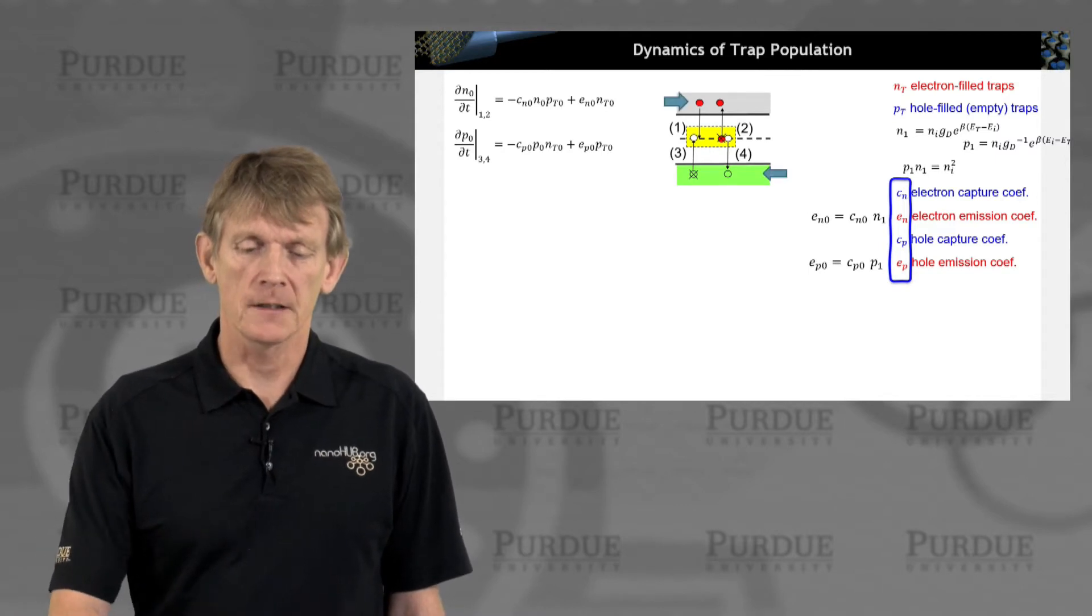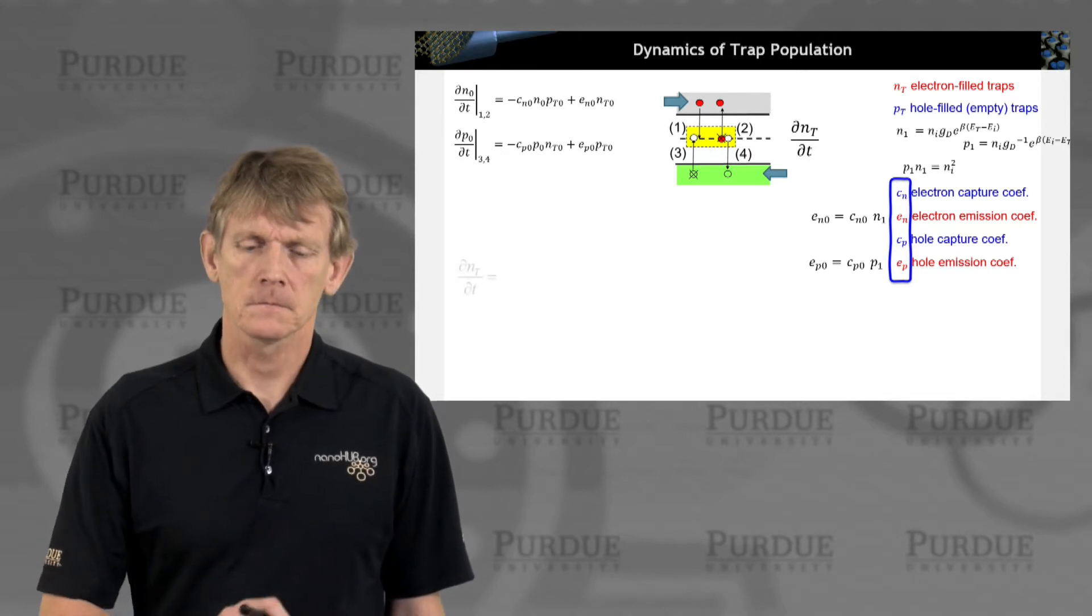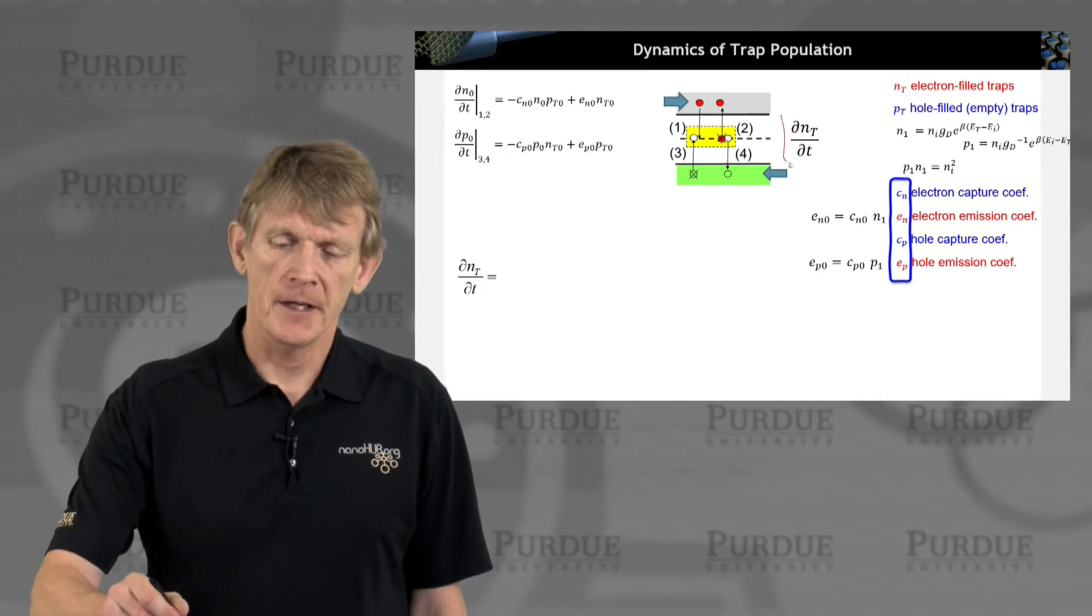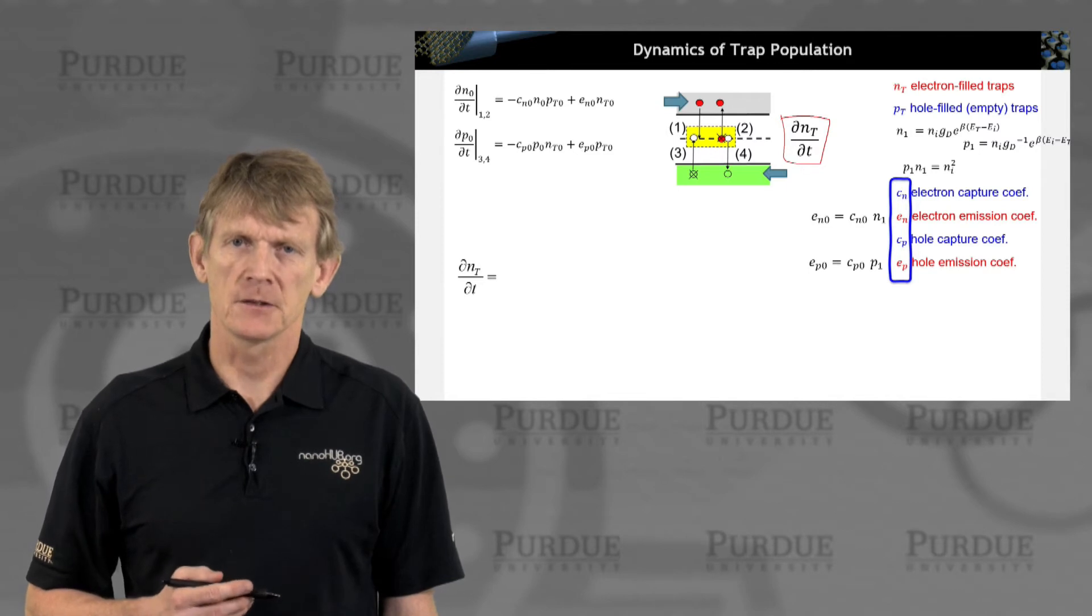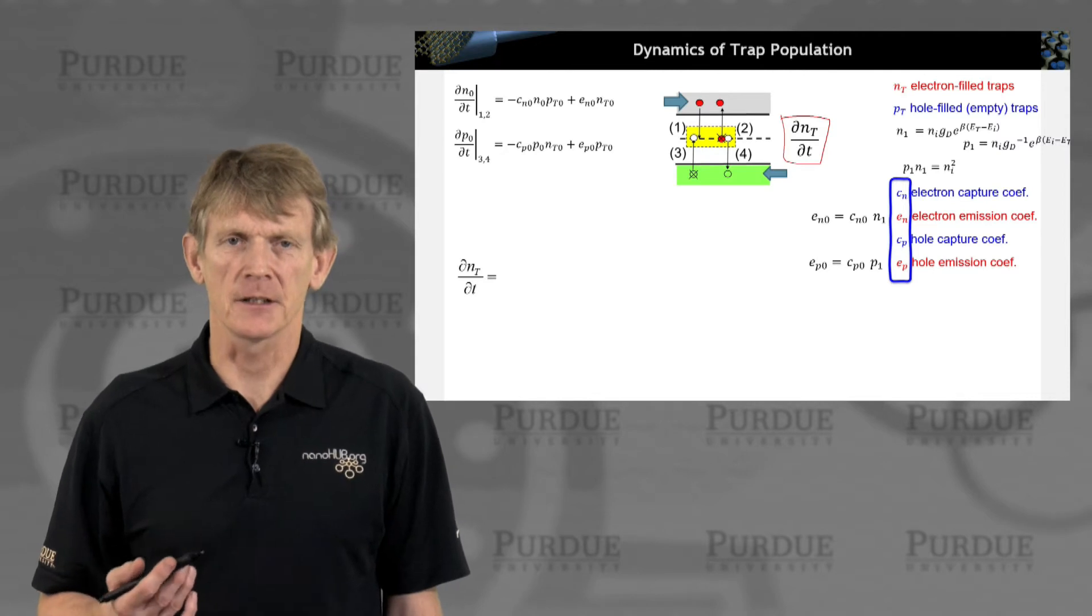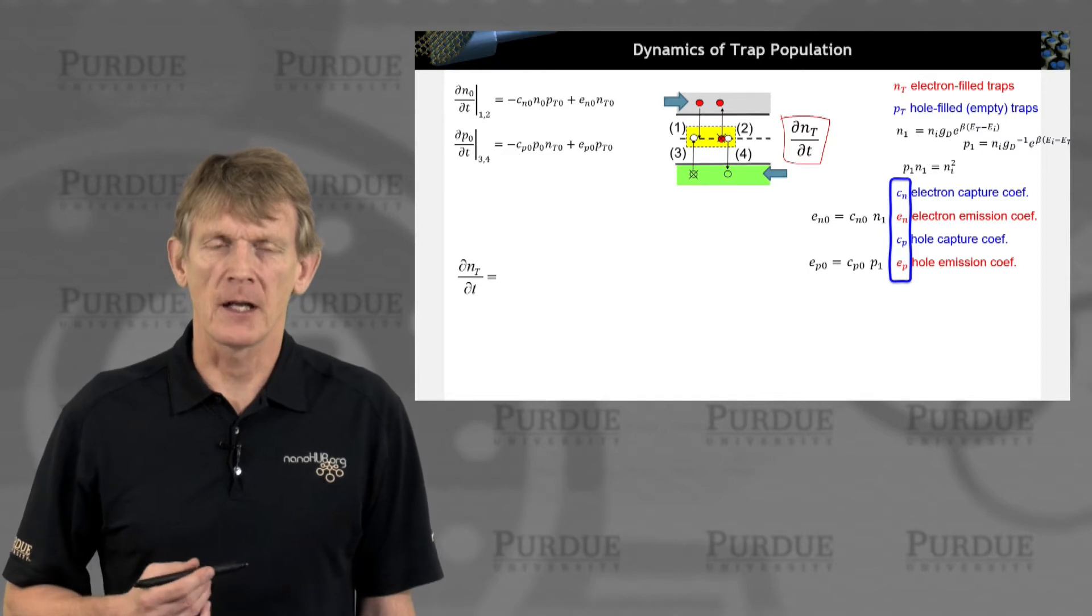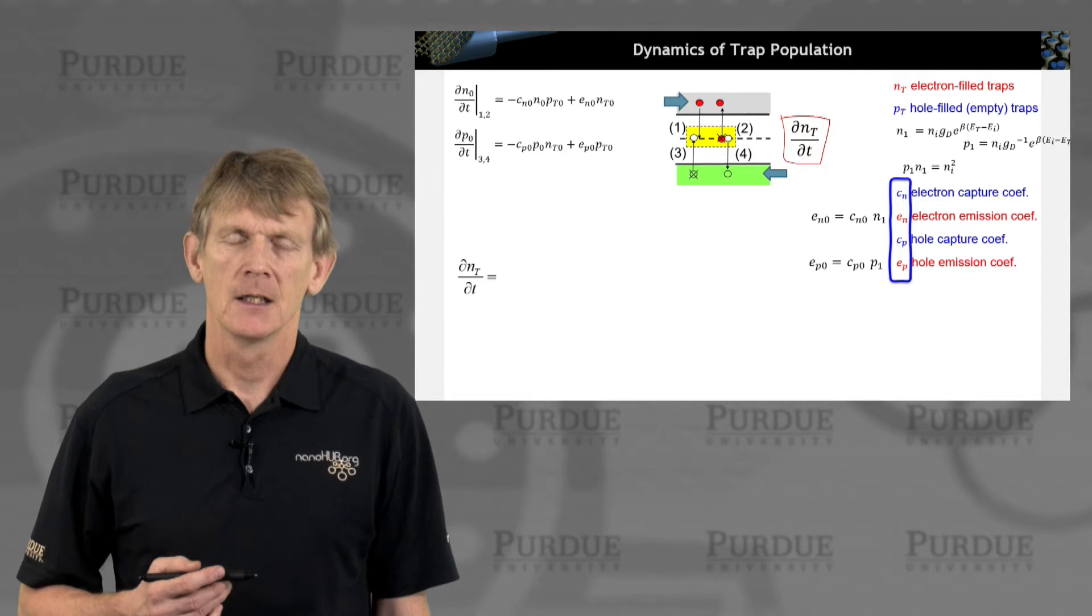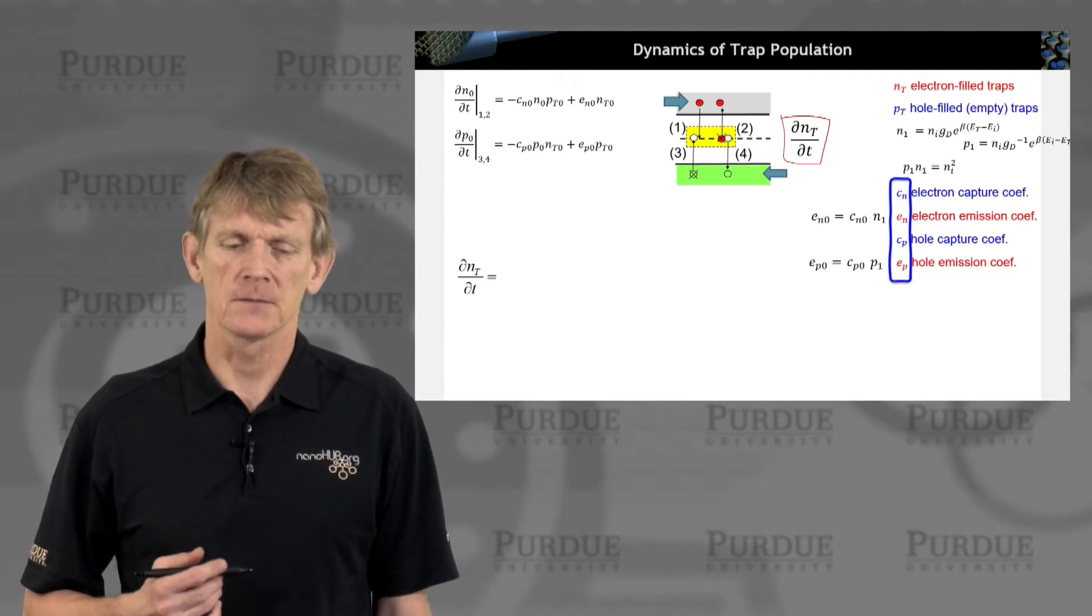Now we're going to look at taking the system out of equilibrium. We're going to look at the occupation of the trap states here in time as a function of perturbation. We're going to imagine we might inject carriers through an applied voltage through contacts, or we might inject carriers through an optical interaction. And we're going to look at the occupation of the traps due to such processes.